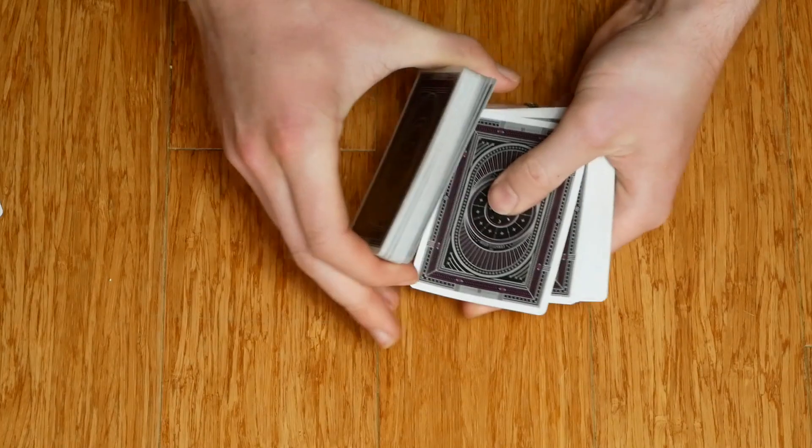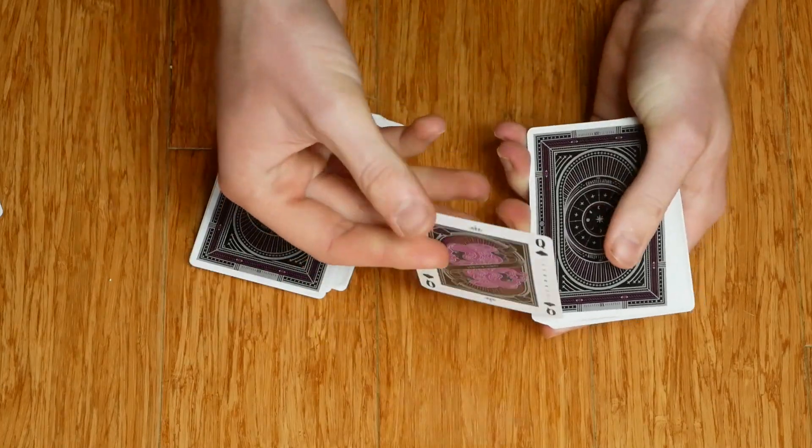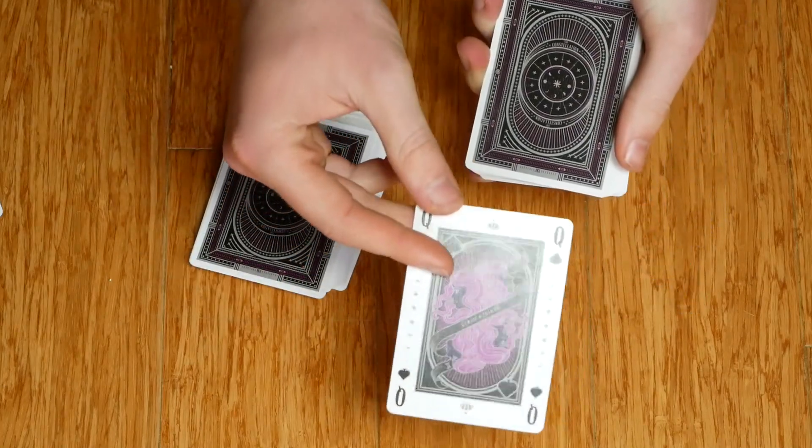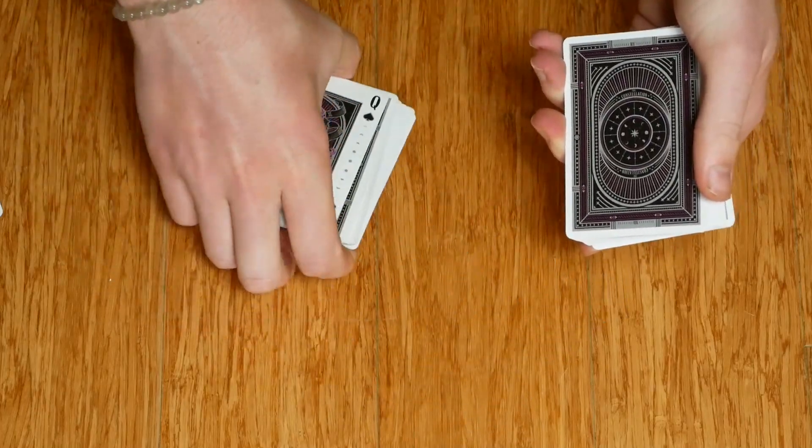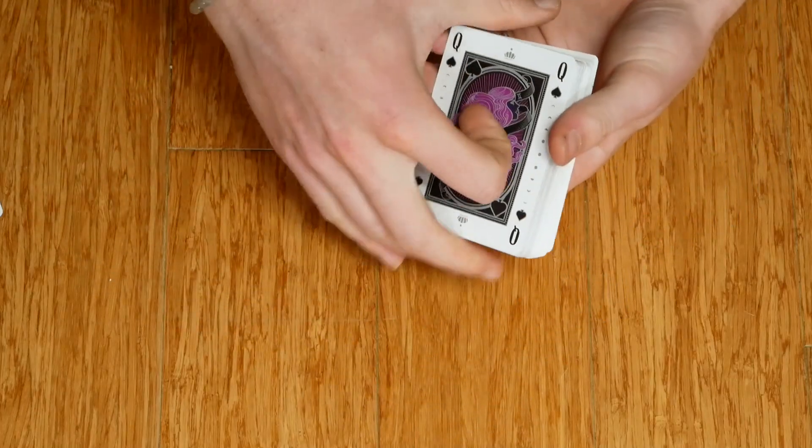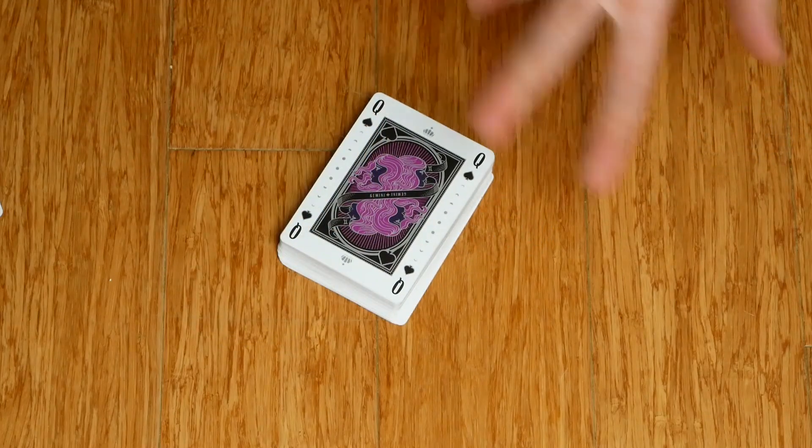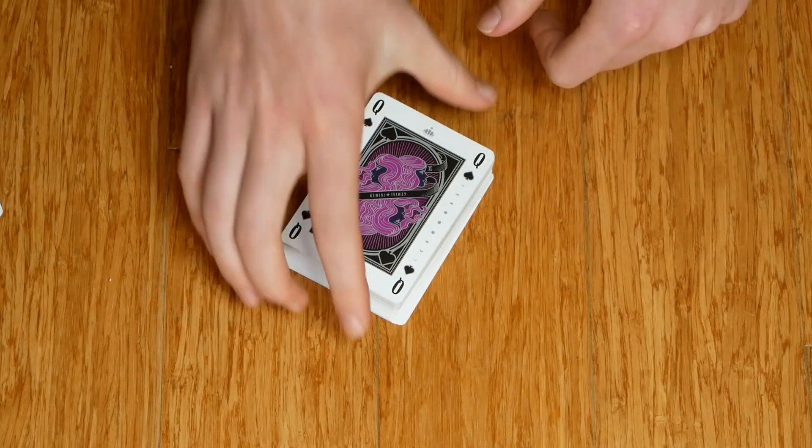Now, normally what I do is I have them pick a random card from the middle. Doesn't matter what it is. I chose here the Queen of Spades. This deck has the advantage that the face cards are pretty cool looking, so if you can somehow make them choose a face card, that's a pretty good option. That's our card.